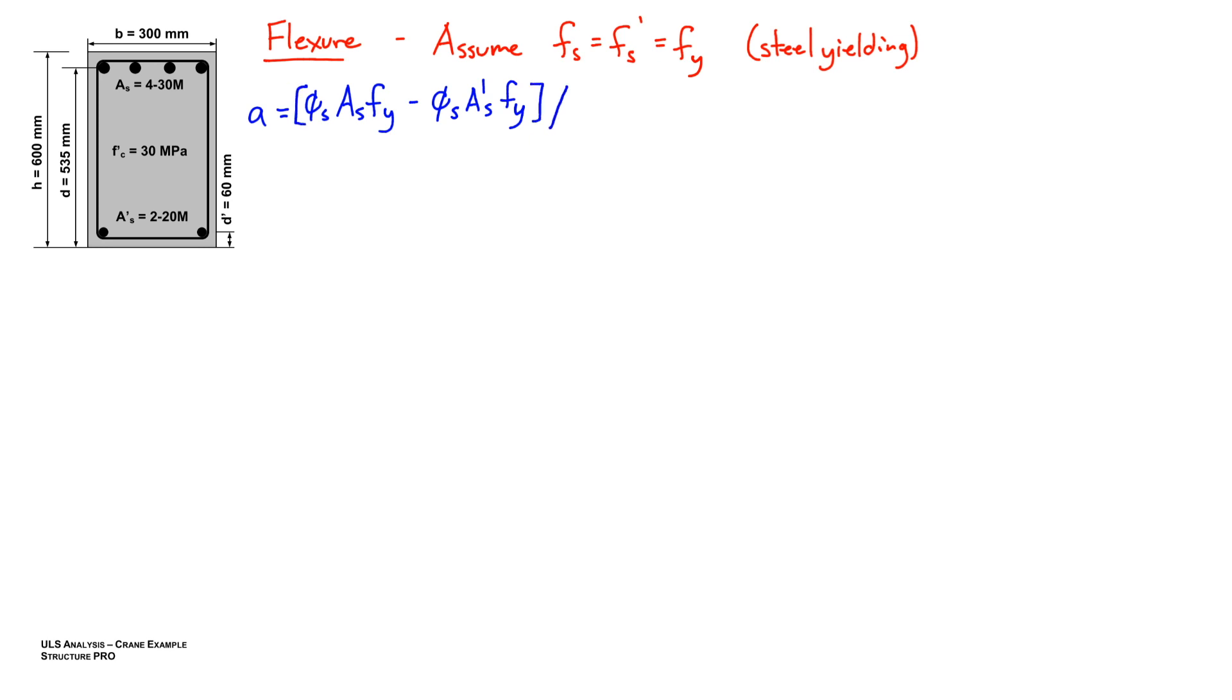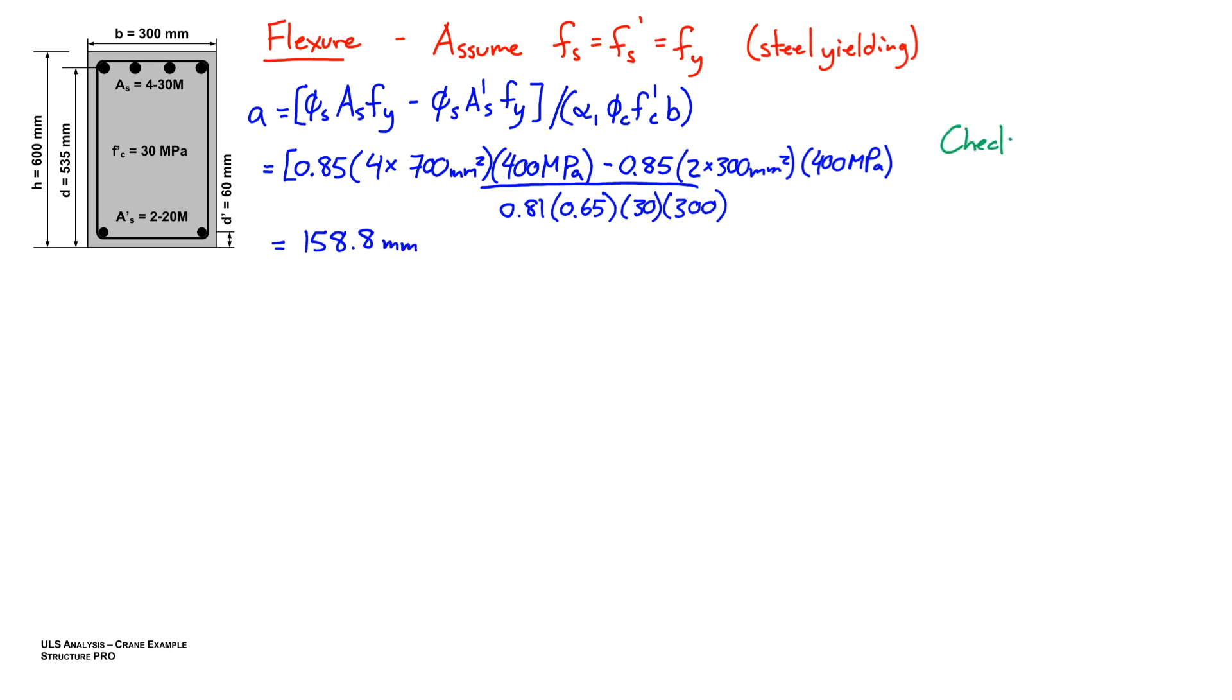This allows us to use equilibrium to solve for a pretty quickly, and then we can verify our assumption. Recall that a is the depth of our stress block, part of the resultant concrete force. We can use all three resultants—the two resultants from the steel layers and the other component of the concrete resultant force—to solve for a. That's what we're doing right here, of course assuming the steel yields. In the end, we get a depth for our concrete stress block of 158.8 millimeters. It's time to see if that is a real value or not.